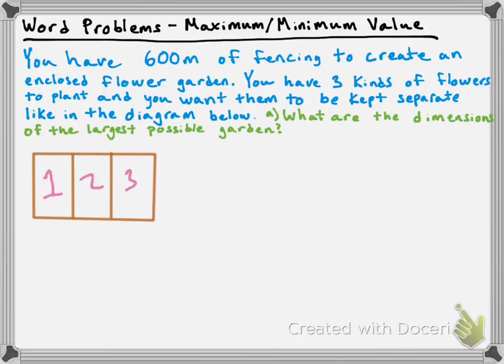This is a maximum or minimum value problem, because what we're really doing is looking for the maximum possible area for the garden. The largest possible garden means the largest possible area I can cover, so we are maximizing something here — we're specifically looking for the dimensions of the maximum area. So how do we tackle this problem?